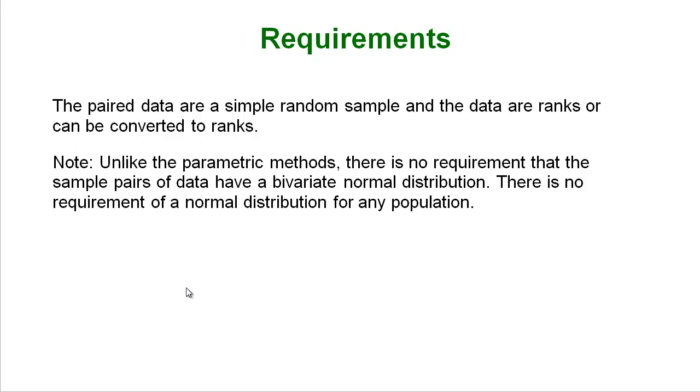Requirements. The paired data are simple random samples. We always kind of have that requirement that we're taking simple random samples and the data are ranks or can be converted into ranks. Special note, unlike the parametric methods there is no requirement that these pairs of data have a bivariate normal distribution and there is no requirement of a normal distribution for any population. So it doesn't matter where you're getting this data. It doesn't have to come from normal distributions, normally distributed populations, which is a huge advantage.